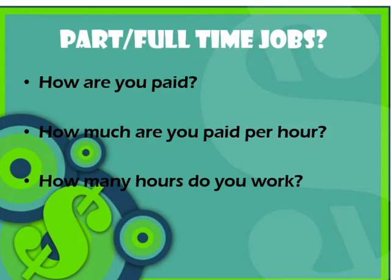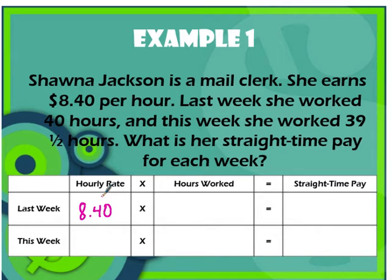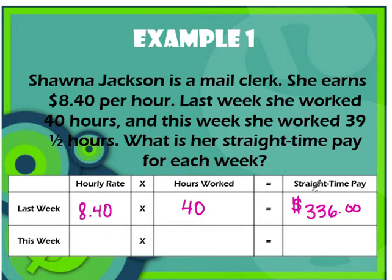Our first problem: Shawna Jackson is a mail clerk. She earns $8.40 per hour — that's her hourly rate. Last week she worked 40 hours, and this week she worked 39 and a half hours. What is her straight time pay for each week? Using our formula, we multiply $8.40 by 40 hours. After a quick calculation on my calculator, Shawna's gross pay for last week was $336.